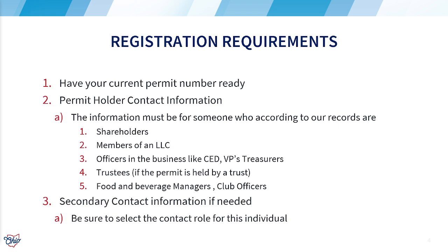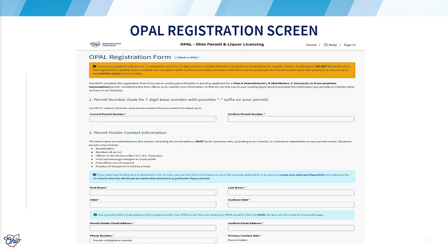Before you begin your registration, please be sure to have these items accessible to complete your application: permit holder contact information. This individual must be someone according to our records as a shareholder, member of an LLC, officer in a company, a trustee, or restaurant manager. The boxes that are in red are mandatory and must be filled out completely.